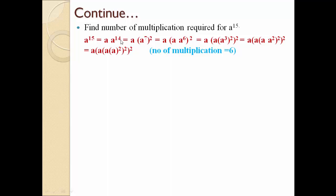Now 14 is even. So we apply a raised to 14 divided by 2 whole raised to 2. 14 divided by 2 is 7. So a raised to 7 whole square. Now 7 is odd, so the third condition applies: a into a raised to n minus 1, that is 7 minus 1 equals 6. So a into a raised to 6. Now 6 is even, so we apply a raised to 6 divided by 2 whole square, which is a raised to 3 whole square. Now 3 is odd, so we write a into a raised to 3 minus 1, that is 2.